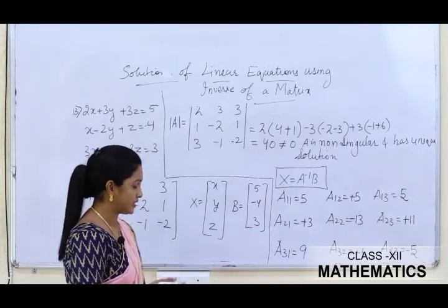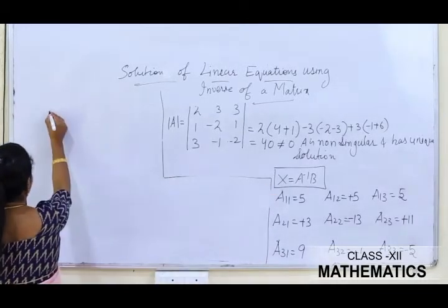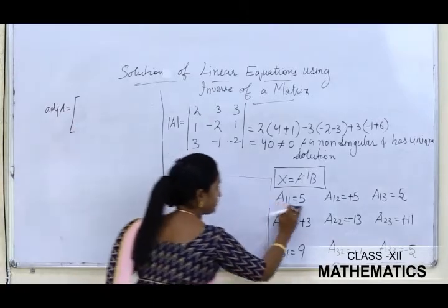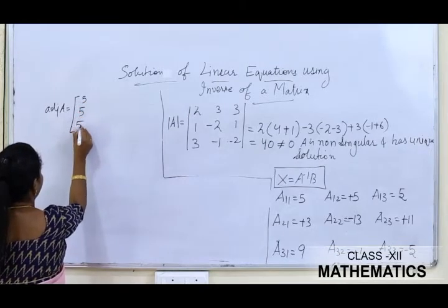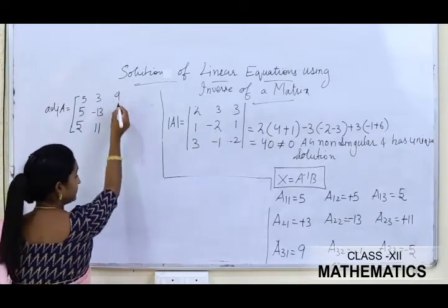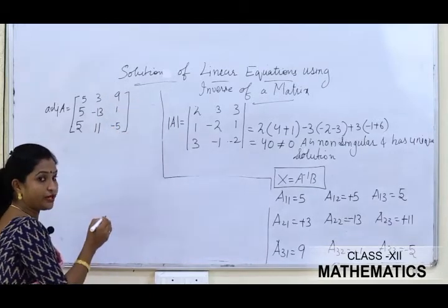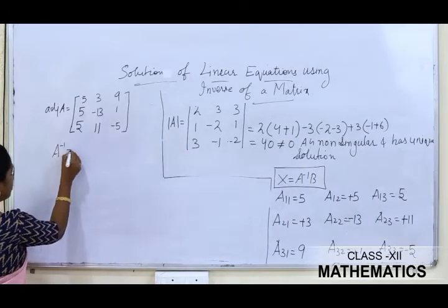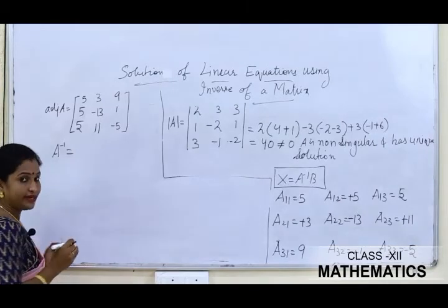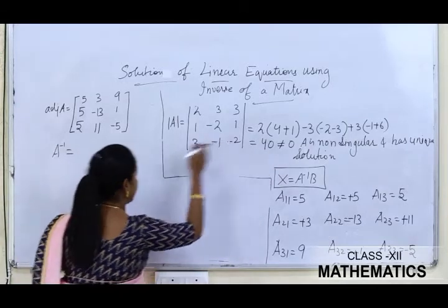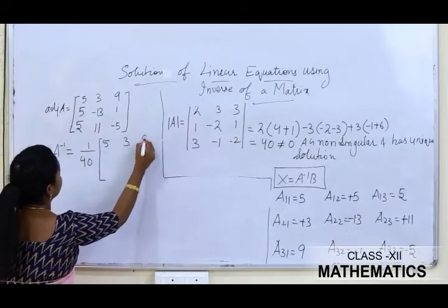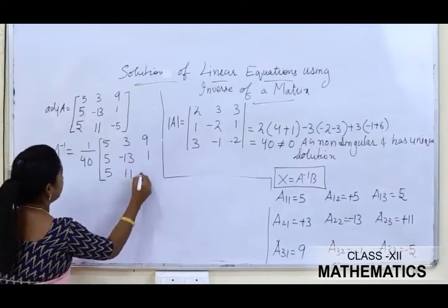The adjoint of A is the transpose of the cofactor matrix: adj(A) = [5,3,9; 5,−13,1; 5,11,−5]. Therefore, A⁻¹ = (1/40) × [5,3,9; 5,−13,1; 5,11,−5].